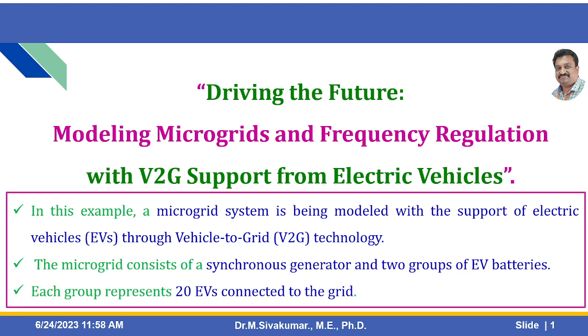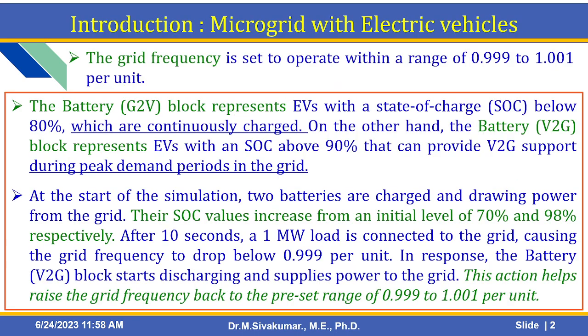The microgrid consists of a synchronous generator and two groups of electric vehicle batteries. Each group represents 20 electric vehicles connected to the grid. Small introduction about microgrid with electric vehicles.